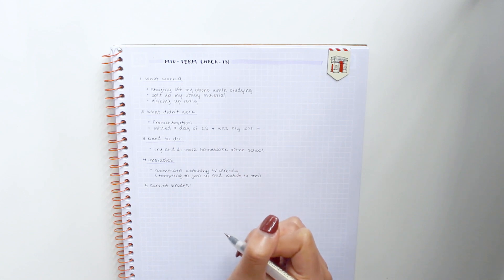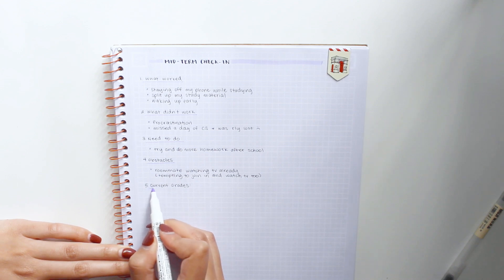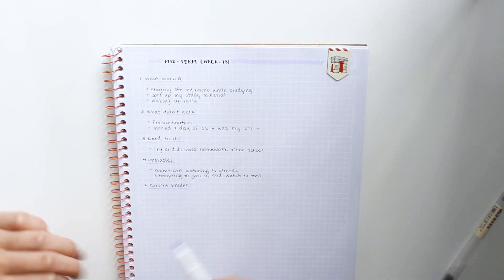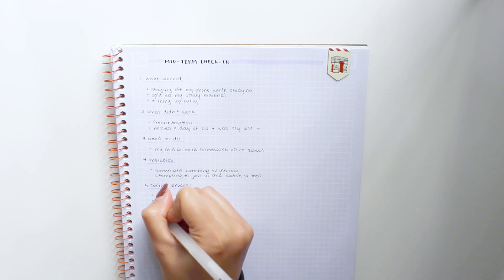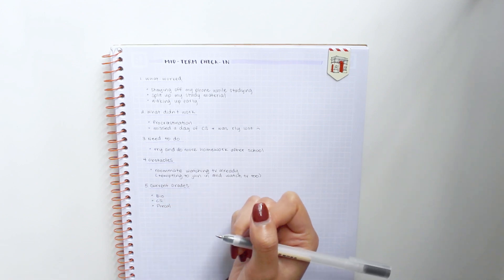Sometimes you get lucky and your professor will put the grades into some sort of website like Blackboard, but sometimes you get one of those professors where you have no idea what grade you have in the class. If that's the case, I would actually talk to the professor to see where you're at in the class.